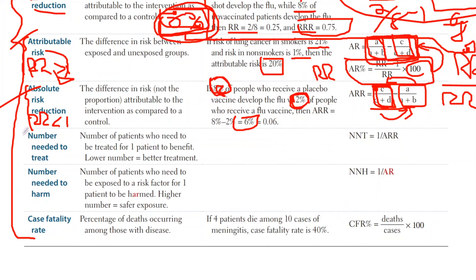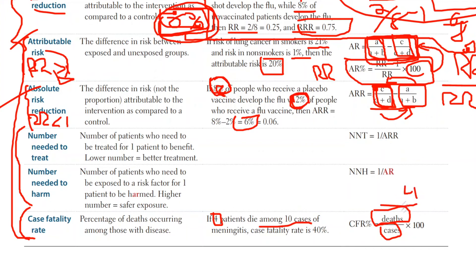That leaves us with number needed to treat, number needed to harm, and case fatality rate. Case fatality rate is very simple: take the number of deaths and divide by the total number of cases. For example, if four patients die from meningitis among ten cases in the hospital, then it's 4 over 10 times 100, giving you 40%. This is how case fatality rate is reported for different conditions.